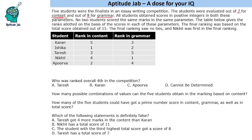The students obtained scores in positive integers in both parameters. No 2 students got the same marks in the same parameter, meaning all of them have distinct marks in content and distinct marks in grammar. The table gives ranks allotted based on scores in each parameter, and the final ranking was based on total score out of 15. The final ranking saw no ties, and Nikhil was first overall. We are given the ranks, not the marks, and we must determine possible marks in the two sections.